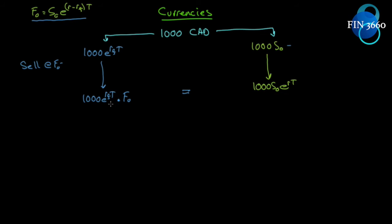If they're not — if they're different — one can see an arbitrage opportunity right away, because we can go both ways: one will be more valuable than the other even though they're the same thing. That's a riskless profit. So because they must be equal, we have an equality written as: 1000 × e^(RF×T) × F₀ must equal 1000 × S₀ × e^(R×T).